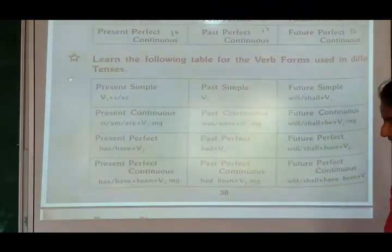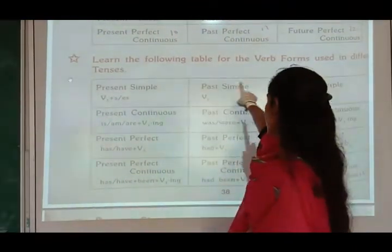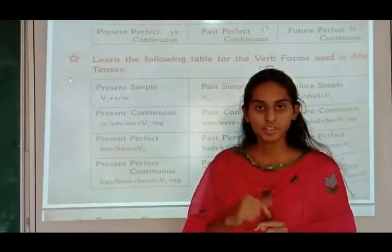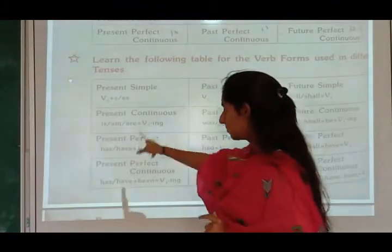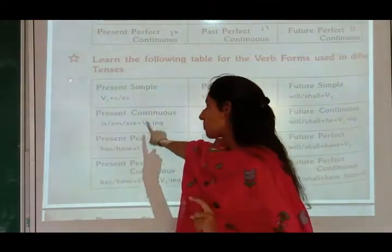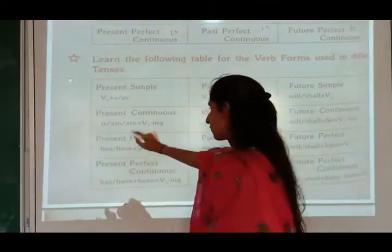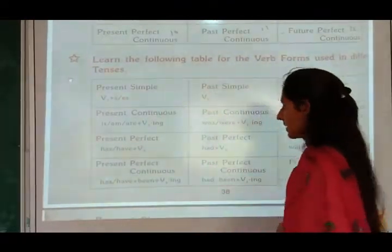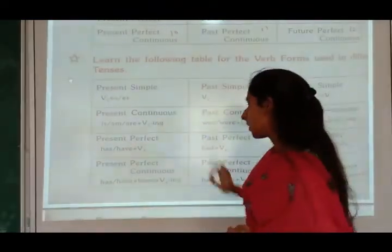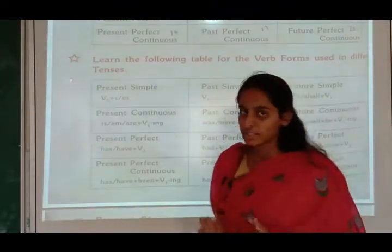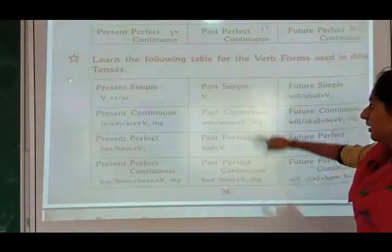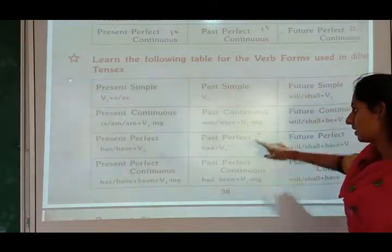Now here are the formulas for verb forms. Learn the following table for verb forms used in tenses. In present simple, we use the first form of verb, and S or ES is added. In present continuous, we use subject plus is/am/are, plus first form of verb and ING. In present perfect, we use subject plus has or have, and the third form of verb.